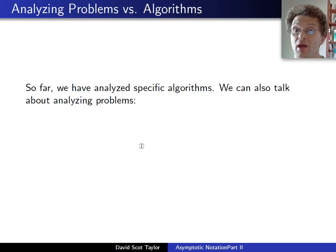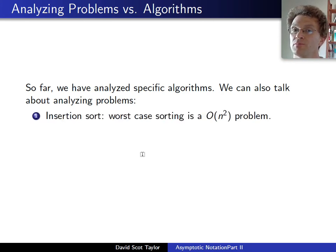So far, we've talked about analyzing a couple of specific algorithms, bubble sort and finding the max. You can also analyze, instead of specific algorithms, analyze problems in general. So I can say, let's think about the problem of sorting. Now, we know that insertion sort is a worst case n-squared big O. Insertion sort sorts, and it's a big O of n-squared algorithm. So that tells us that sorting, in the worst case, sorting is still a big O of n-squared problem. Because there exists a big O of n-squared algorithm to sort, the problem of sorting is a big O of n-squared problem.